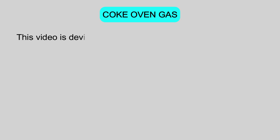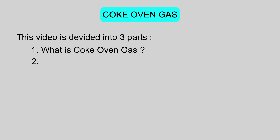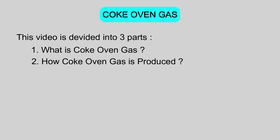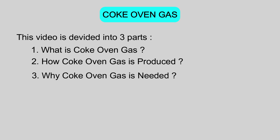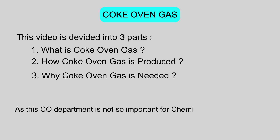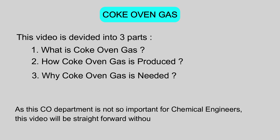This video is divided into three parts: what is coke oven gas, how coke oven gas is produced, and why coke oven gas is needed. As this COG department is not so important for chemical engineers, this video will be straightforward without any flowchart.